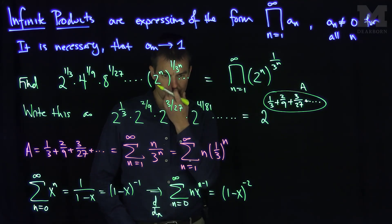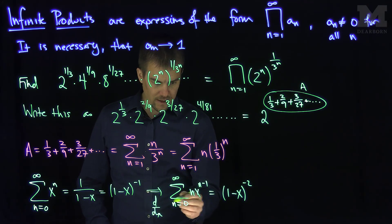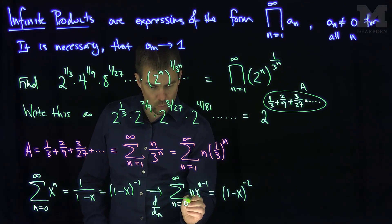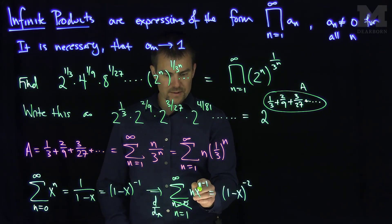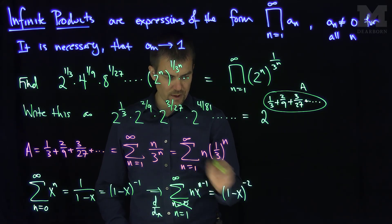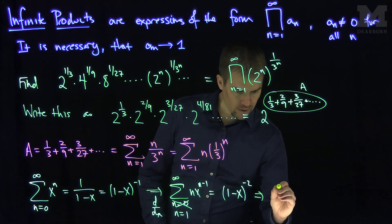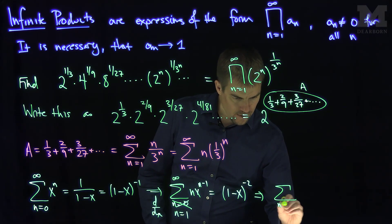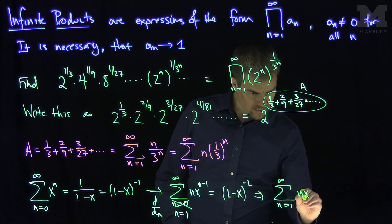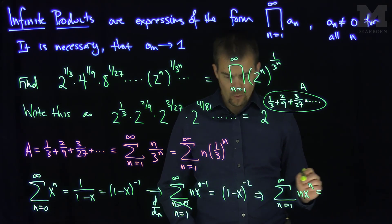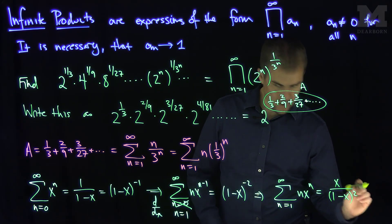The negatives cancel by the chain rule. We note that when n equals zero we get nothing, so we can start the sum at n equals one. Taking this x to the negative one and moving it to the other side, we get the formula: the sum as n goes from one to infinity of n times x to the n equals x over one minus x, quantity squared.